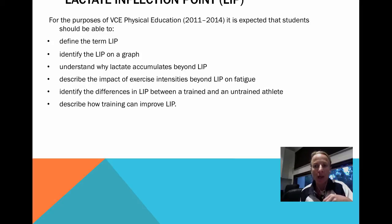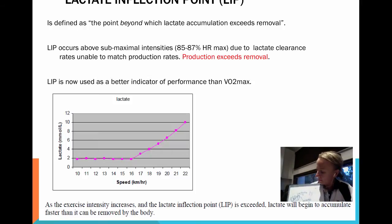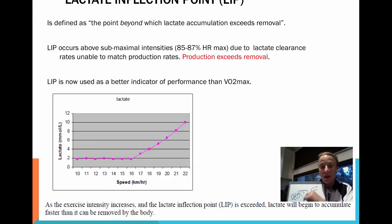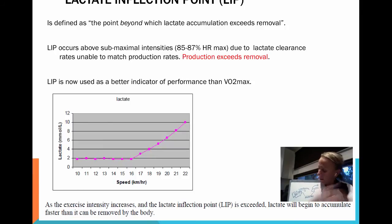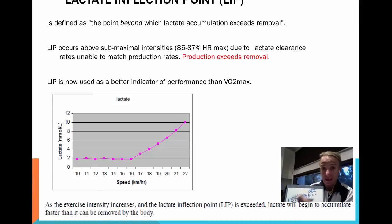What type of training is best to improve LIP? LIP can be defined as the point beyond which accumulation of lactic acid exceeds its removal. Inside our muscles, when we produce ATP, lactate is produced but it's also removed. When we're exercising at submaximal intensities, removal meets the production of lactate. However, when lactate production is faster than we can remove it — when removal is not as fast as it's being produced — that is when we've reached our Lactate Inflection Point.